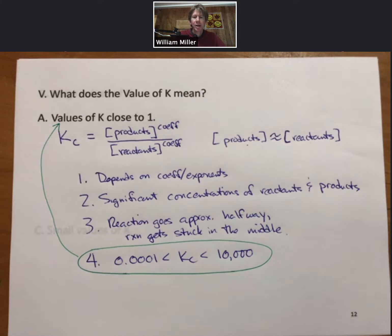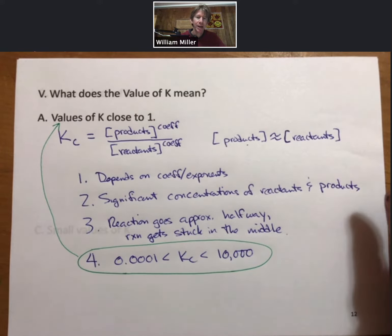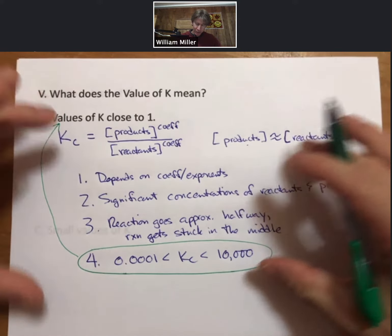Which is a pretty broad range. It's actually eight orders of magnitude, ten to the minus four to ten to the plus four. But that's a good rule of thumb when reactions are somewhere in the middle.